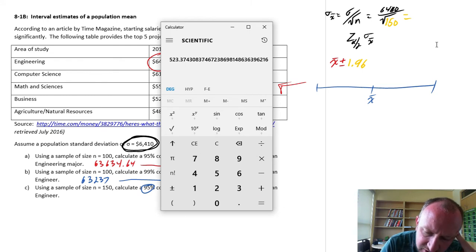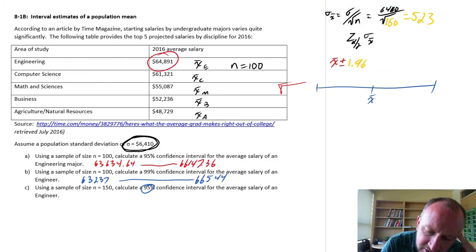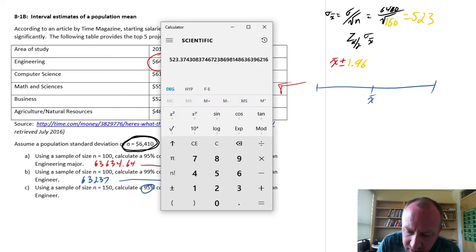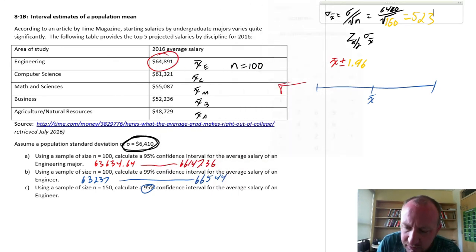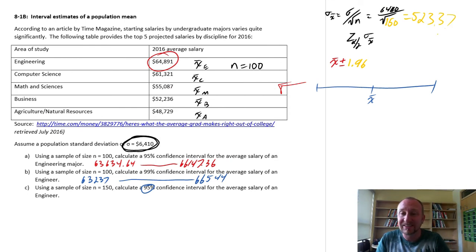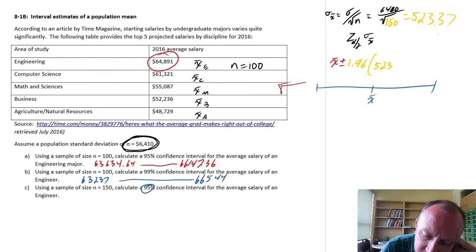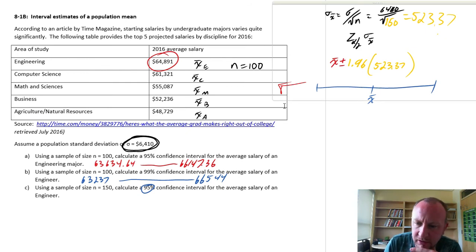So $523.37. So now that standard error is reduced because I have a larger sample. And so it's going to be more robust. This will be a more robust estimator of the true population mean, right? So it's a point estimate. Now it'll be more of a robust estimate. And so what's that going to do? Well, if the standard error is smaller, the margin of error is going to be smaller. And so let's just see what happens here. I don't want to spoil the surprise.